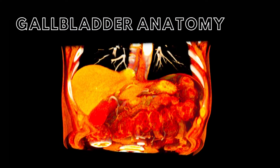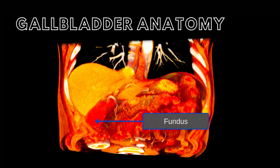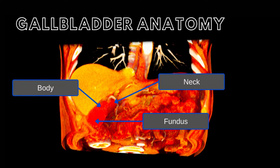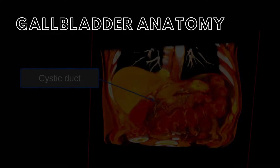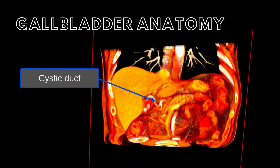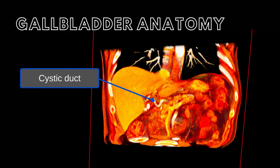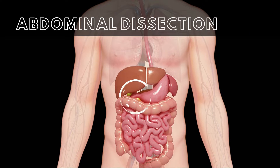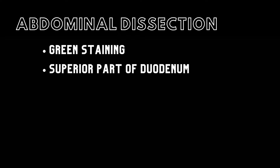The gallbladder has a distinctive pear shape and is divided into three sections: the fundus, body, and neck. The neck of the gallbladder serves as the exit point for the cystic duct. The right and left hepatic ducts exit the hilum of the liver, joining with the cystic duct to form the common bile duct, which drains bile into the duodenum. Interestingly, during a dissection of the abdomen, it is not uncommon to observe a green staining of the superior portion of the duodenum, caused by the close contact between the fundus of the gallbladder and the duodenum, where bile is stored.